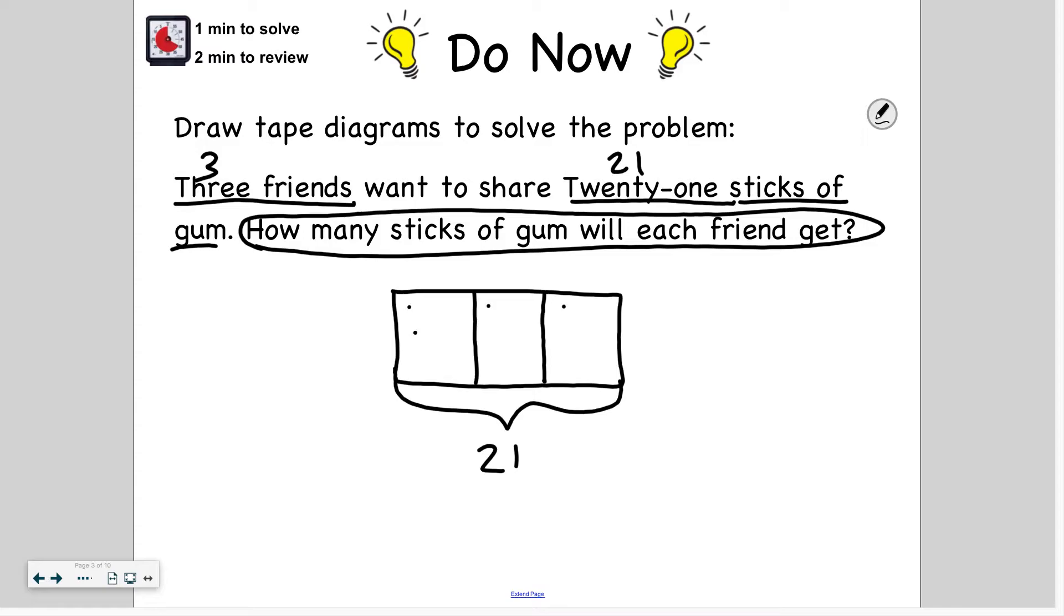One, two, three, four, five, six, seven, eight, nine, ten, eleven, twelve, thirteen, fourteen, fifteen, sixteen, seventeen, eighteen, nineteen, twenty, twenty-one. So I see one, two, three, four, five, six, seven, seven, seven sticks of gum in each box. So each friend gets seven sticks of gum.